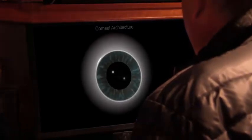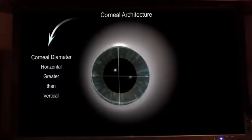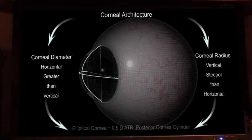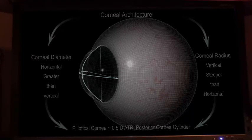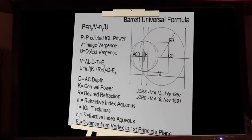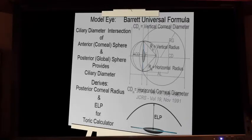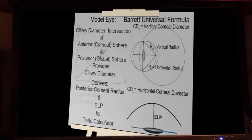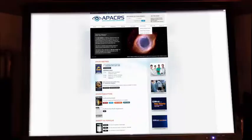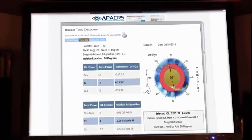The cornea has a unique architecture. The horizontal diameter is almost always greater than the vertical, and the radius of the posterior cornea is therefore steeper than the horizontal. A key feature of my Universal Formula is that it predicts a ciliary diameter. This enables me to construct a horizontal and vertical corneal diameter and derive the posterior corneal curvature for each eye. The calculator uses vector maths, and the required toric lens power can be accurately calculated from the effective lens position. I have created an online program so that anyone can use the improved calculator at apacrs.org.